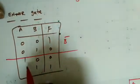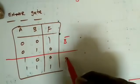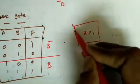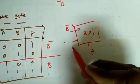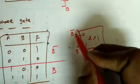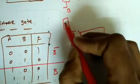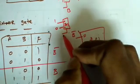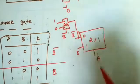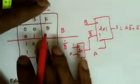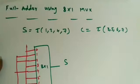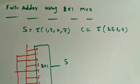For the XNOR gate using a 2×1 MUX with A as select line: when A=0, F follows B-complement so data input is B'; when A=1, F follows B so data input is B. If B' is not available, use another 2×1 MUX to generate it. Two 2×1 MUXes are required to implement XOR, XNOR, NAND, or NOR when complements are not available.